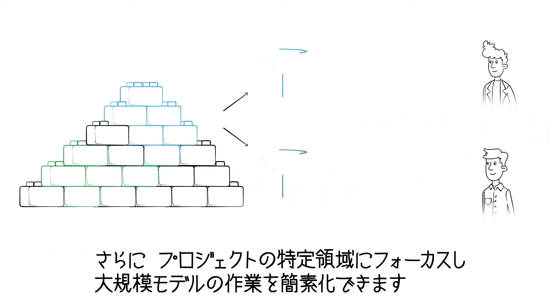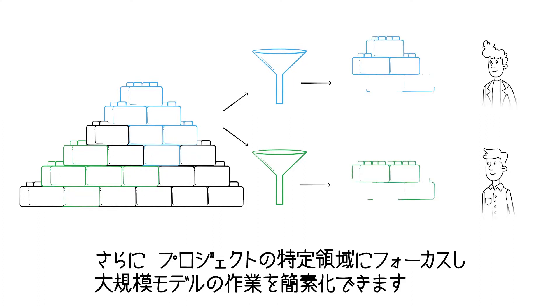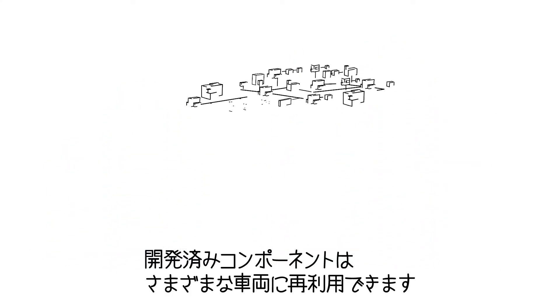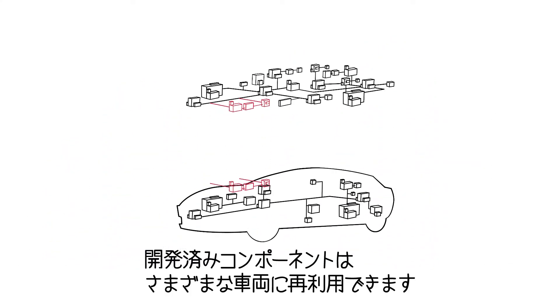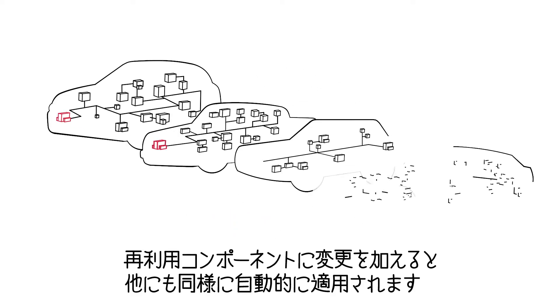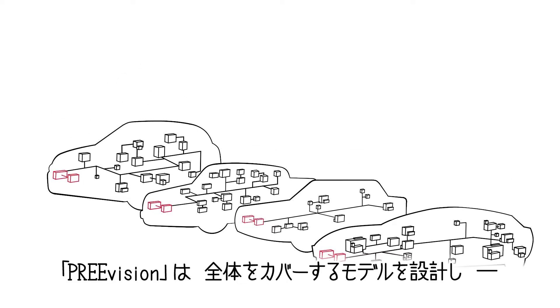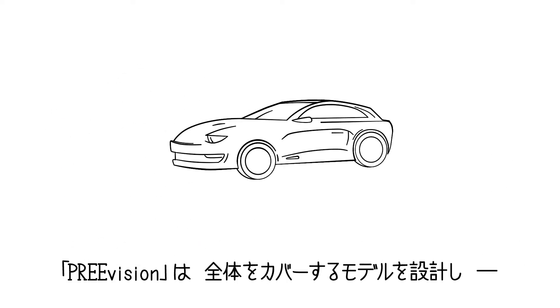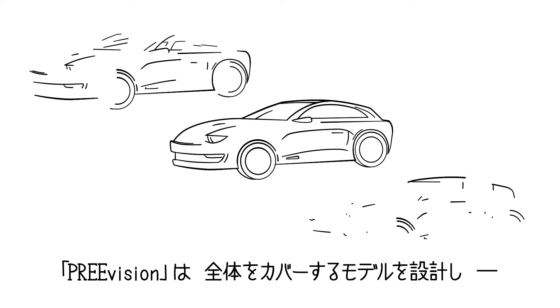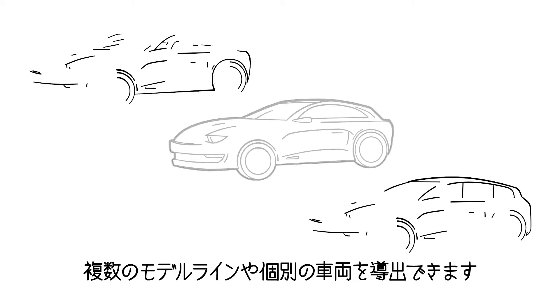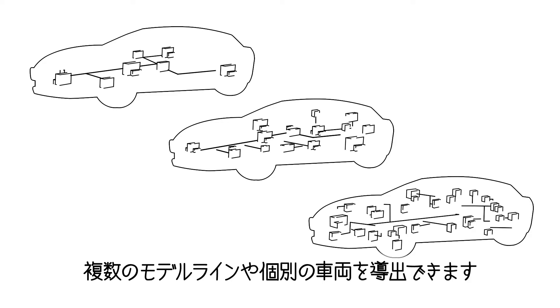To simplify the work with huge models, role-specific, focused views of the relevant areas of a project are possible. Already developed components can be reused in various vehicles, and changes on any reused components are automatically applied to all reuses. In PreVision, complete model ranges can be designed from which several model lines, as well as unique individual vehicles, can be derived.